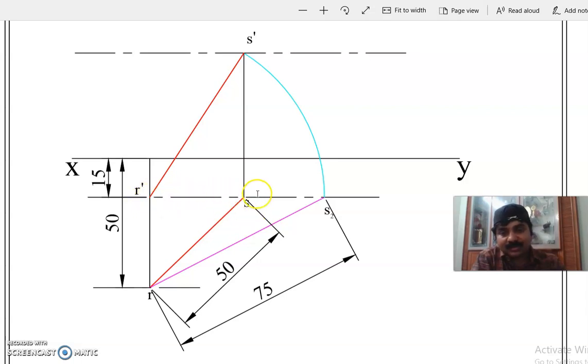First we have to draw the locus line 15mm below XY line, which is where the top view endpoint S will fall. So R as center, RS equals 50mm, we will cut this locus line here. So that you get the top view RS.